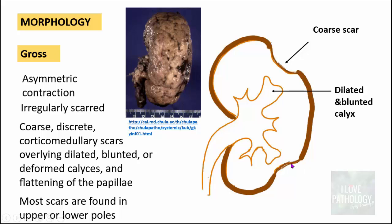Most of these scars are usually found in the upper or lower poles, but in end-stage renal disease you can find scars throughout the renal parenchyma and across the entire external surface of the kidney. Remember, these are coarse, depressed scars — classically referred to as U-shaped scars.